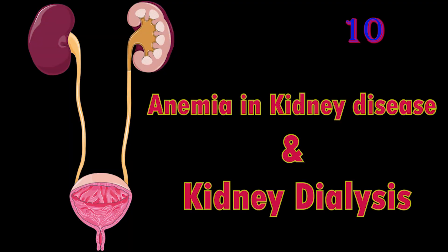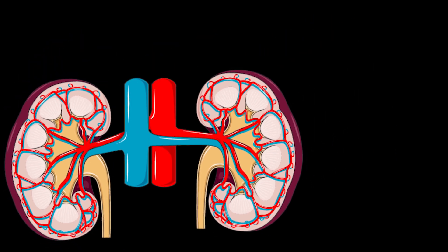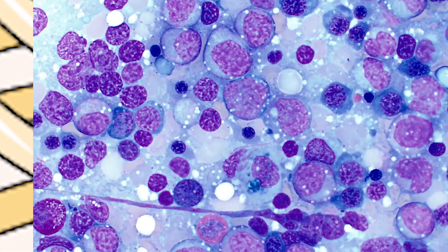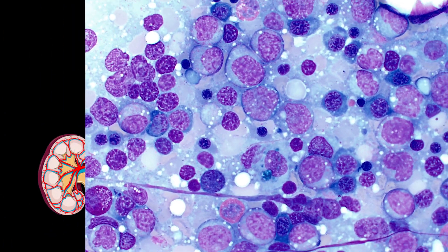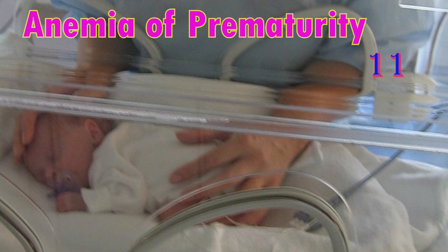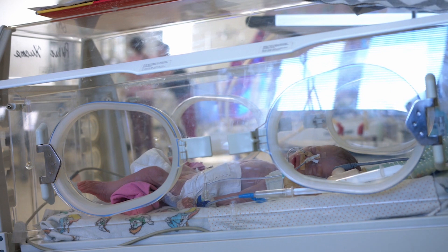Anemia in kidney disease and kidney dialysis: when the kidneys are damaged, they reduce production of erythropoietin hormone, which reduces the production of RBCs in the bone marrow, causing anemia.